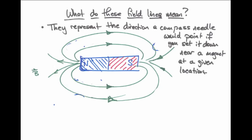You'll often see a bar magnet drawn with strange lines around it, starting from the North Pole and ending at the South Pole. These green lines represent what's called the magnetic field around the bar magnet. Another way to phrase this is that they represent the field of influence that is exerted by that bar magnet on any other magnet that might be placed nearby.